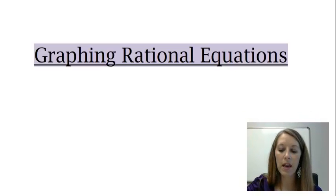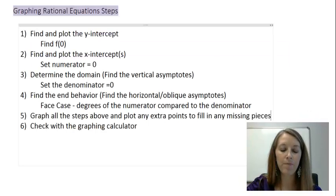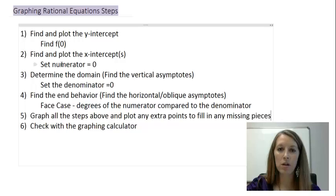Before we do that, let's review the steps. The first four individual steps are key parts to helping us sketch the graph of these rational equations. First, the y-intercept by finding f of 0. Then the x-intercept, technically by setting the whole equation equal to 0, but we know we can simplify it by just setting the numerator equal to 0.